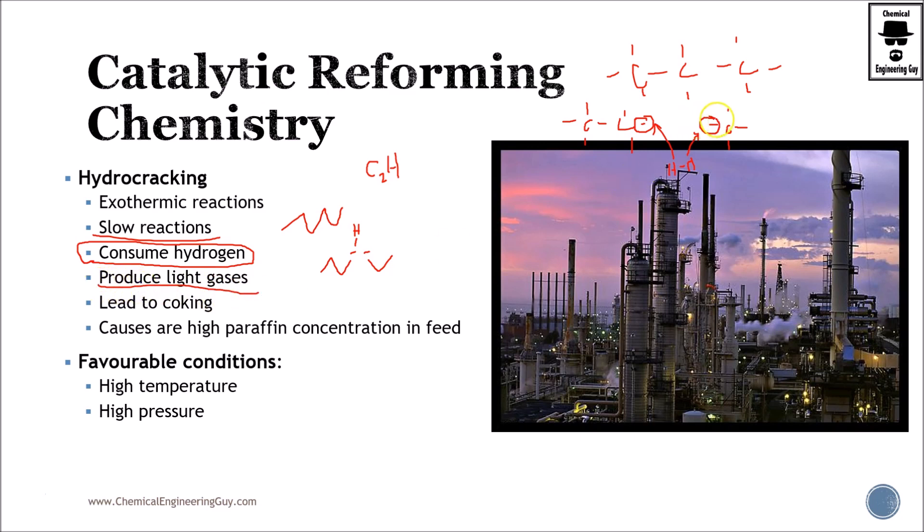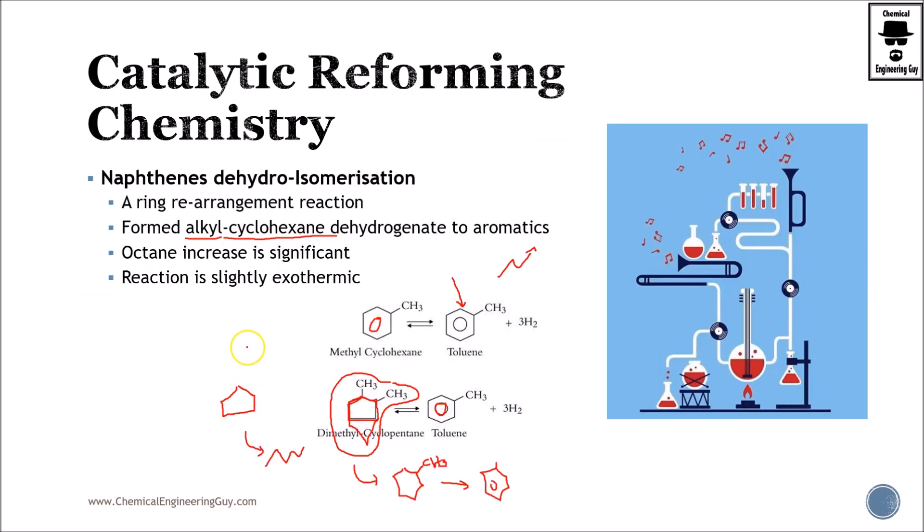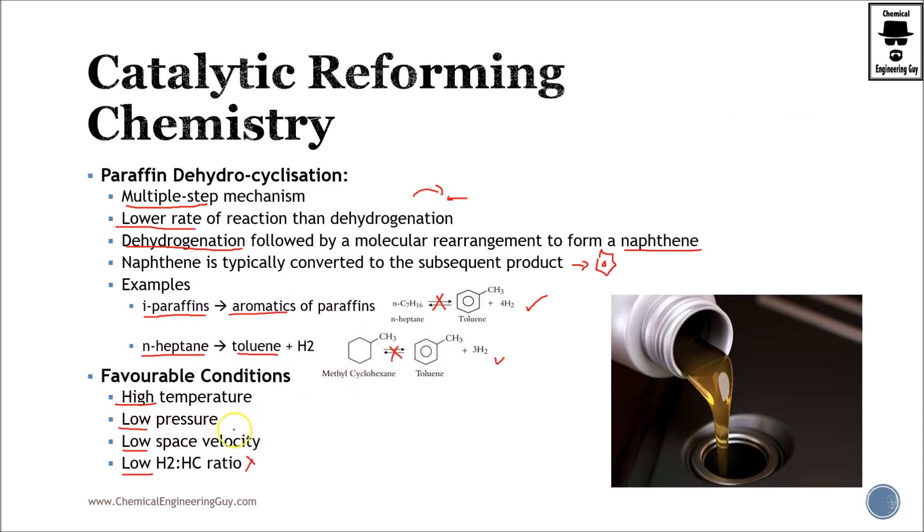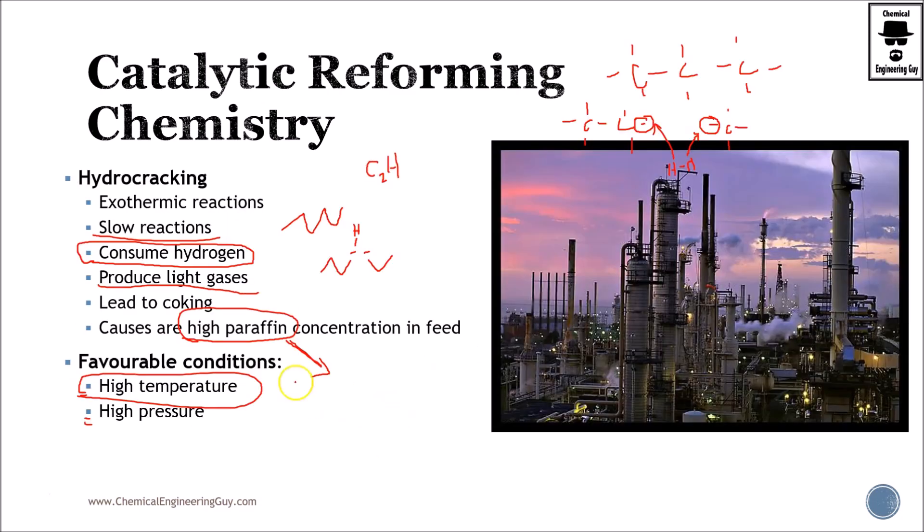It produces light gases, leads to coking as well, causes high paraffinic concentration in the feed. So if you have a high paraffin material or feed in the heavy naphtha you must ensure the correct treatment of these materials. Favorable conditions are high pressure and high temperature so you gotta avoid typically high temperature. If you remember, let's check out, most of the processes do not require either low pressure or low temperature. So you just gotta ensure that you do not achieve the conditions for cracking.